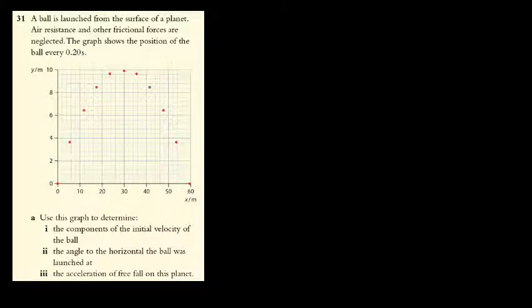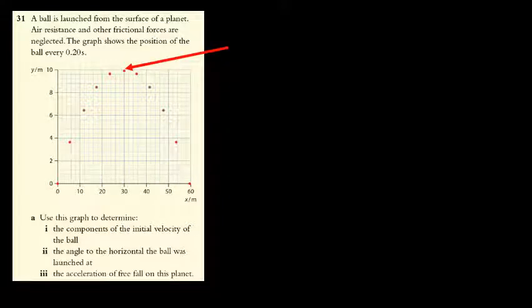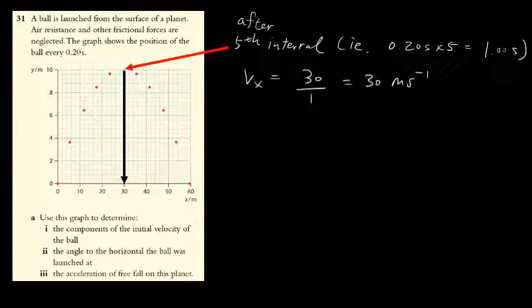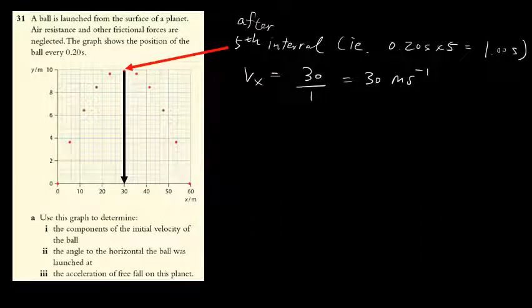For the next question, the graph asks you to determine the initial velocity components — vertical and horizontal — of the ball. I will choose to look at the fifth point because it is probably the easiest to refer to in the graph. The horizontal displacement at that point is 30 meters, and you know the time is five intervals of 0.2 seconds, so the time is 1 second. Therefore, the horizontal speed is 30 divided by 1, which gives 30 meters per second.